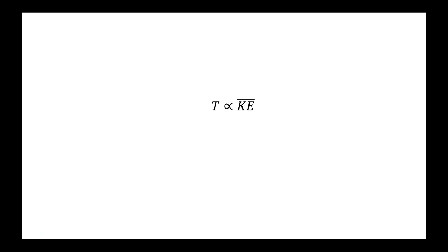We're also going to show that if we want to make this an equation, the constant of proportionality that we must add is 3 halves times Boltzmann's constant.